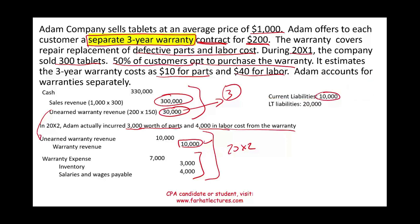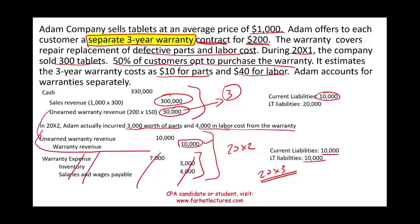What would you report in 20x2 as far as liabilities? You still have ten thousand of unearned warranty revenue as current liabilities and ten thousand as long-term liabilities. What about 20x3? Let's assume none of the customers came back in 20x3 — no warranty work was needed. You would still record: debit unearned warranty revenue, credit revenue for that year's straight-line amount.